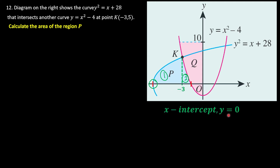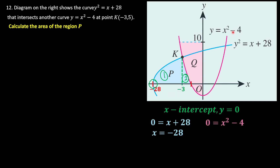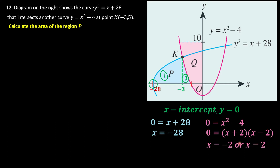To find the x-intercepts, we set y = 0. For the blue curve, substituting y = 0 gives x = -28. For the red curve, substituting y = 0 gives a quadratic to solve, with roots of -2 and 2.